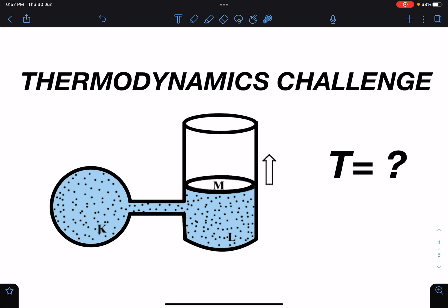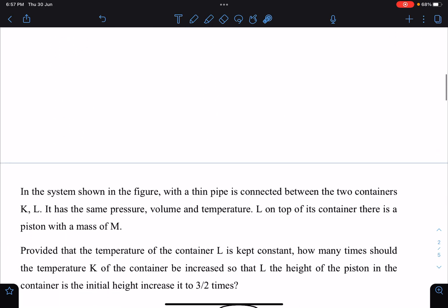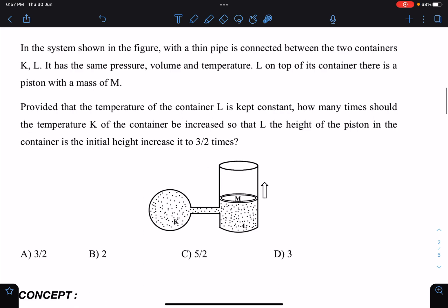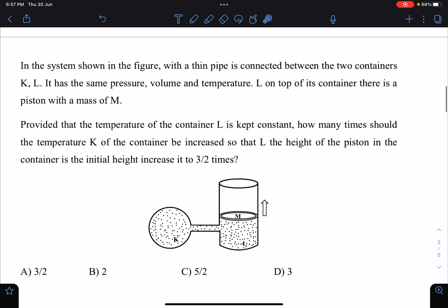Piston problems. So here is the problem statement. In the system shown in the figure, a thin pipe is connected between the two containers K and L. So this is one container K and this is another container L.